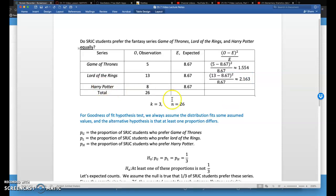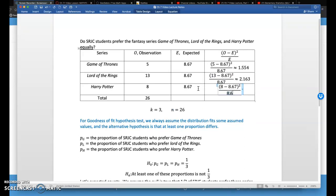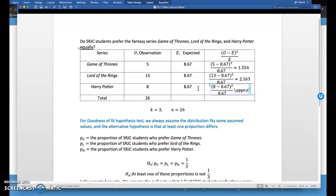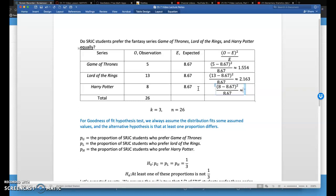And then for the last category, Harry Potter, notice the observed and the expected are pretty close, so we're not going to get a very different answer. We're going to get a pretty small chi-squared contribution: 8 minus 8.67, square that value, then divide it by 8.67. This is about 0.052.